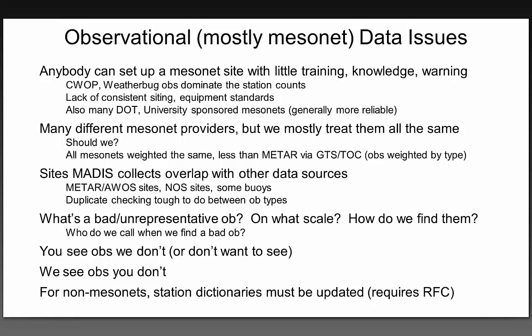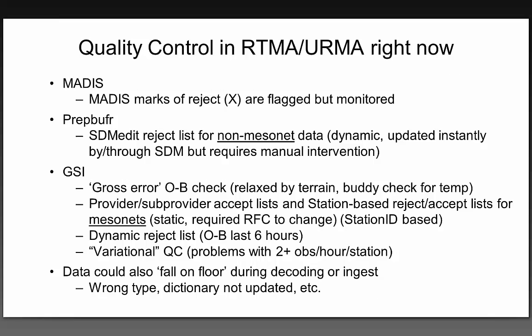There are issues with what constitutes a representative observation for the RTMA. From feedback with WFOs, sometimes they see data we don't, and sometimes we're looking at data they don't. Some stations can't be used because we don't know where they are. For quality control, we do honor QC marks from MADIS — stations MADIS rejects won't be used in the RTMA. There is an SDM reject list that works for non-mesonet data and can be updated quickly, though it requires someone to inform the SDM, change the list, and eventually remove the station if the observation is rehabilitated.